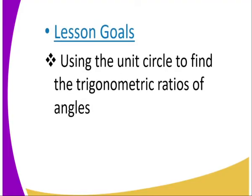The first thing we are going to look at in this lesson is we are going to use the unit circle to find the trigonometric ratios of angles. In our previous lesson, we introduced the unit circle and talked about how it operates — the first quadrant,